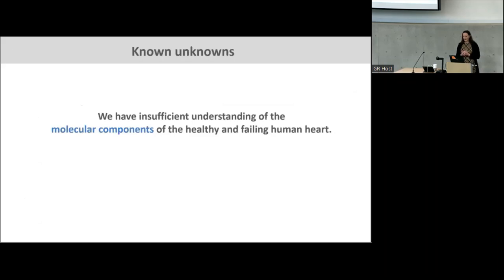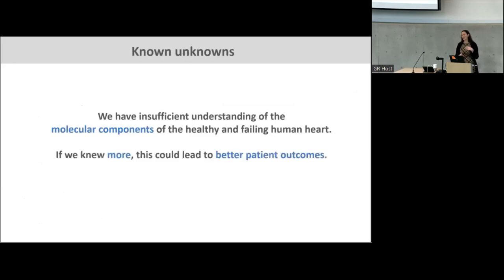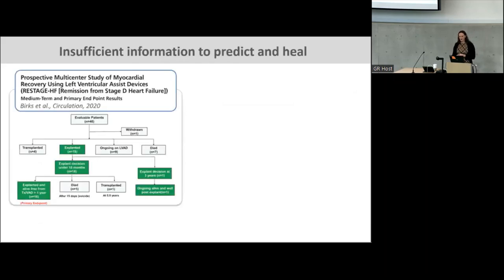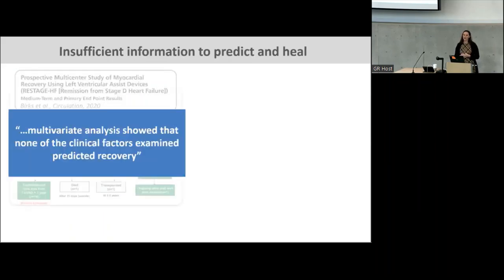I'll start with the molecular research. The very basic principle of what drives the sorts of things that we do in the research laboratory is that we have currently an insufficient understanding of what are the molecular components of the healthy and the failing human heart. Very simply, if we knew more, we could probably impact patient outcomes. For example, from the restaged heart failure study that outlines different patient outcomes from LVAD support, we know that some patients can experience a myocardial remission to the point where the device can be explanted.